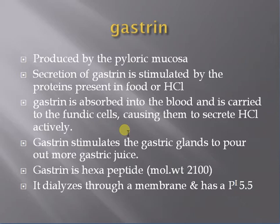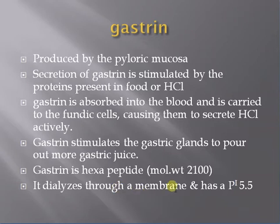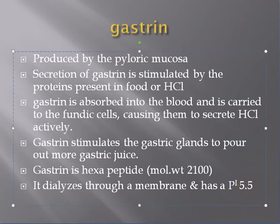Gastrin stimulates the gastric glands to pour out more gastric juice. Gastrin is a hexapeptide with a molecular weight of around 2100. It is dialyzed through a membrane and has a pH of 5.5.